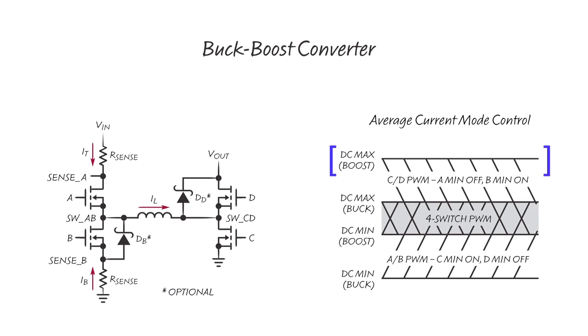When the input voltage is well below the output voltage, the converter operates in boost mode. When the input voltage is well above the output voltage, the converter operates in buck mode. When the input voltage is close to the output voltage, the converter operates in 4-switch buck-boost mode.